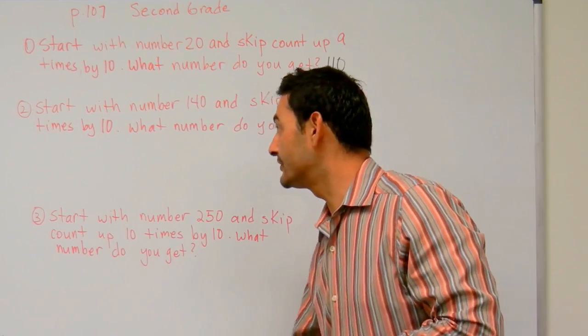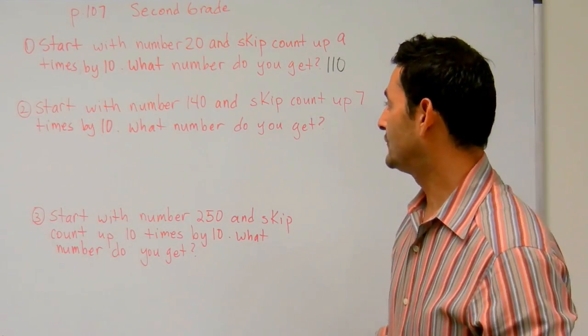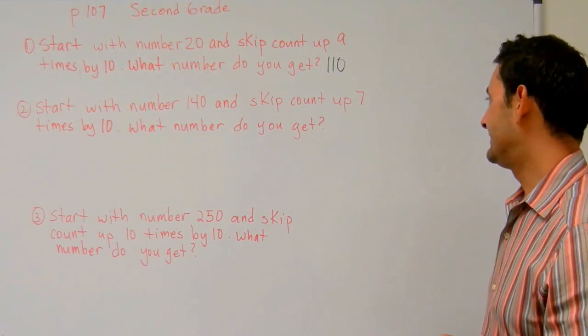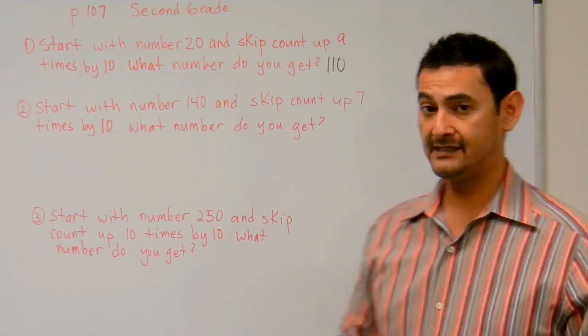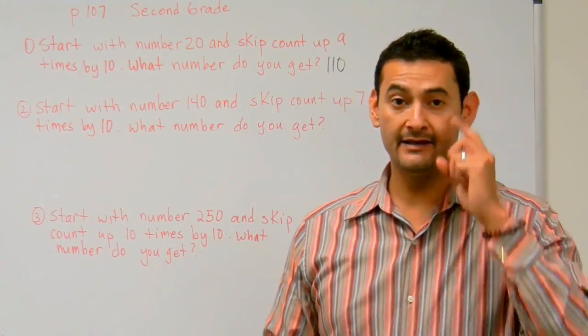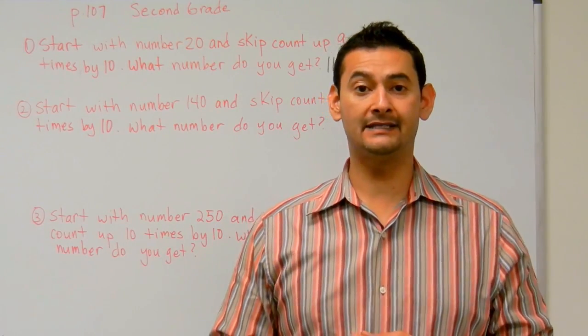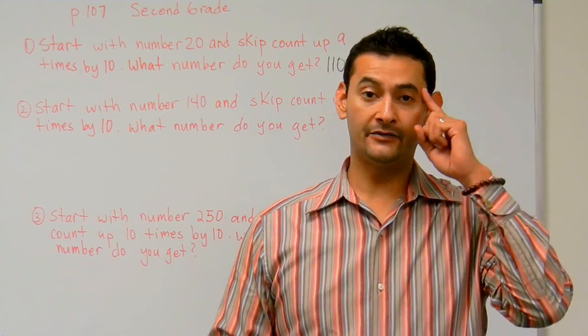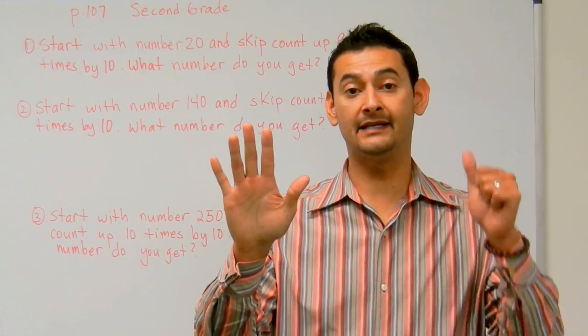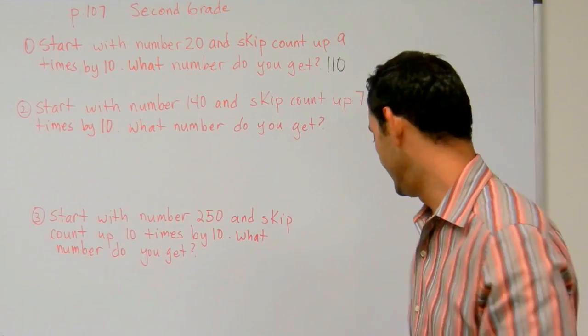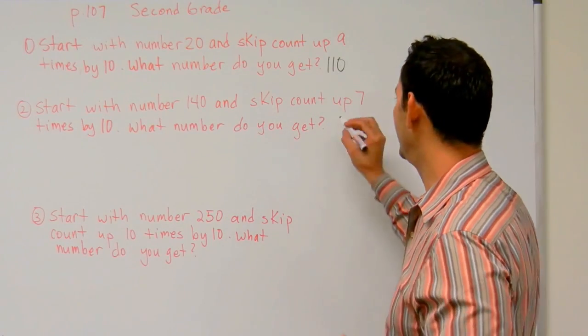Now let's take a look at number two. Here we have start with number 140 and skip count up seven times by ten. What number do you get? So let's see. We're going to put 140 in our head. We're going to skip count up seven times by ten. So let's get started. 140, 150, 160, 170, 180, 190, 200, 210, okay? So this is going to be 210.